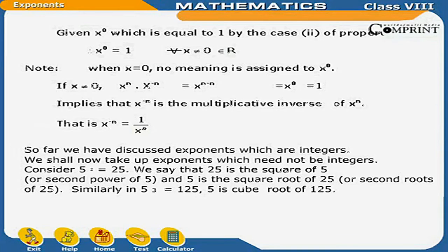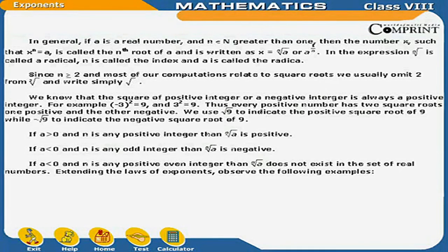So far we have discussed exponents which are integers. We shall now take up exponents which need not be integers. Consider: 5 raised to the power 2 is equal to 25. We say that 25 is the square of 5, or the second power of 5, and 5 is the square root of 25. Similarly, 5 raised to the power 3 is equal to 125, so 5 is the cube root of 125. If A is a real number and n belongs to capital N with n greater than 1, then the number X such that X raised to the power n equals A is called the nth root of A, written as X equals n radical A, or A raised to the power 1 upon n.